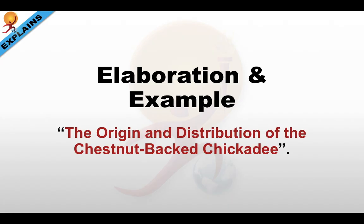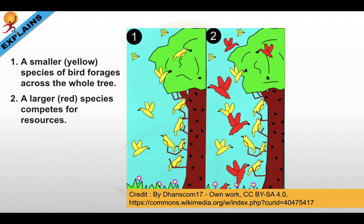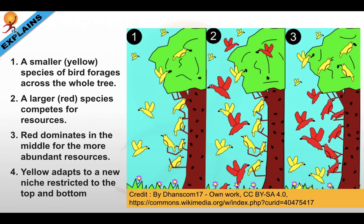Let's take a look at Grinnell's observation from his paper, 'The Origin and Distribution of the Chestnut-backed Chickadee.' The first picture shows a smaller yellow species of bird which has the whole tree to itself and forages — meaning searches and hunts — across the tree for bugs and insects. In the second picture, a larger red species enters the scene and competes with the yellow bird for food. The red bird, being bigger, starts to dominate the middle section of the tree where resources are more abundant. Because of this, the small yellow bird adapts to a new niche, restricting itself to the top and bottom of the tree, thus avoiding the competition.